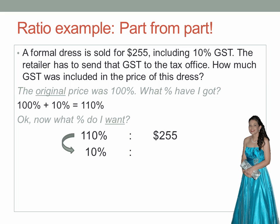How will I get from 110% to 10%? Multiply by the new figure over the old: 10 divided by 110. So, multiply the price by 10 over 110 as well.